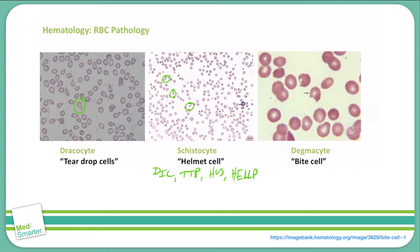Furthermore, the degma site is also known as a bite cell, as you can see here with the arrow. It looks like something has come in and taken a bite out of that red blood cell. We see this very often in G6PD deficiency.